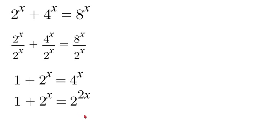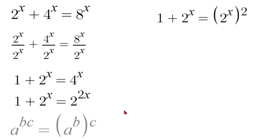Now we are going to use an exponent property to switch around our 2 and x. So if we had a to the power of bc we can say that is equal to a to the power of b to the power of c. So in that sense we can rewrite this as 1 plus 2 to the power of x is equal to 2 to the power of x squared.